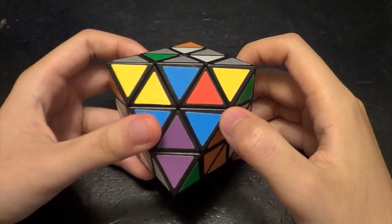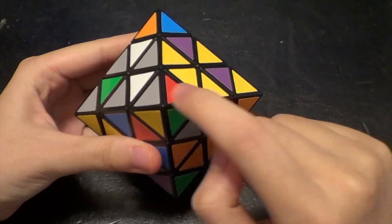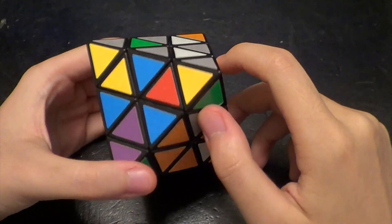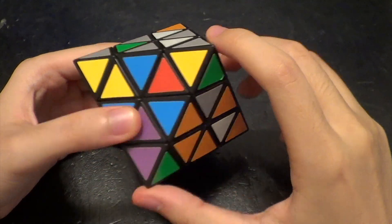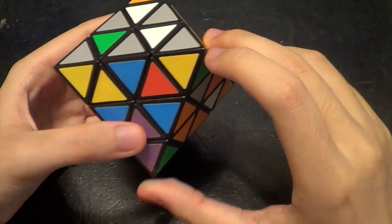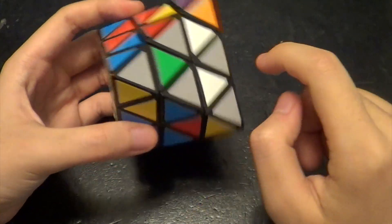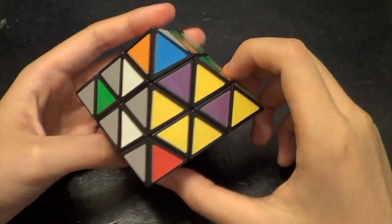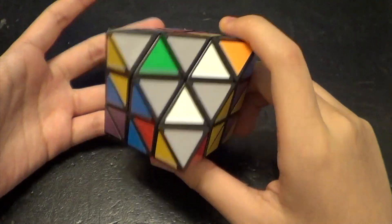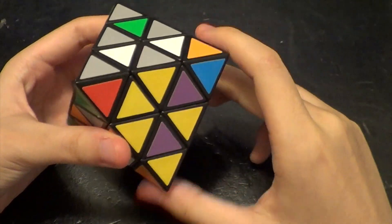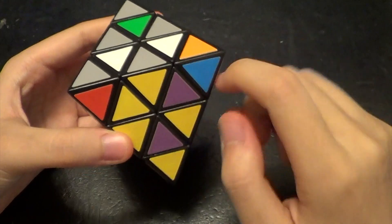Alright, so the next step is solving the vertices, which are these pieces with the four different colors, and we need to cycle them using a very simple algorithm in order to get them all in the correct positions. So first we need to identify which corners we need to cycle, and which direction.